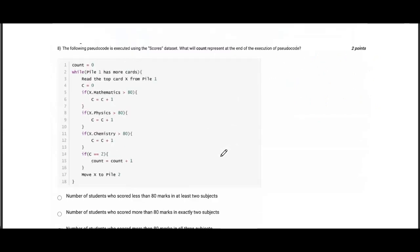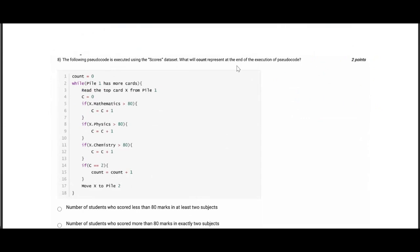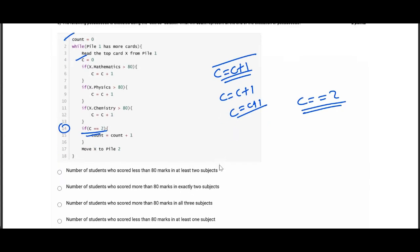Eighth question is, the following pseudocode is executed using scores dataset. This question seems very interesting. Count is zero, and C is also zero. But remember, count and C both are not the same. If mathematics is greater than 80, C is equal to C plus one. And equally, C for physics and chemistry as well. In the 14th line, if we observe, we are only checking or we only want the value of C to be two. That means C will be equal to two when the student scored more than 80 in only two subjects.